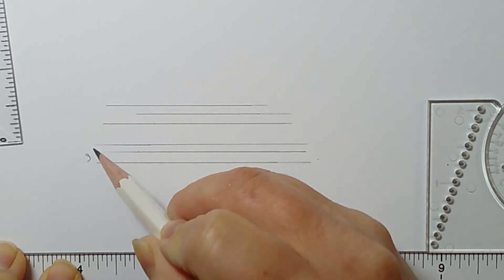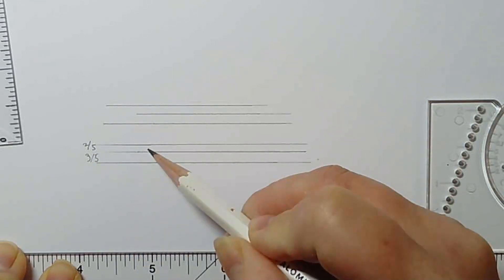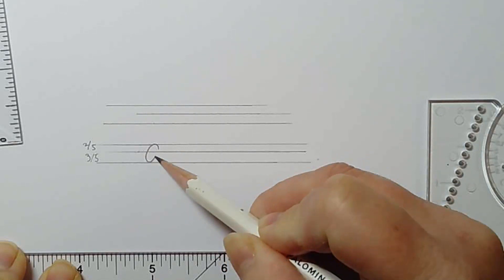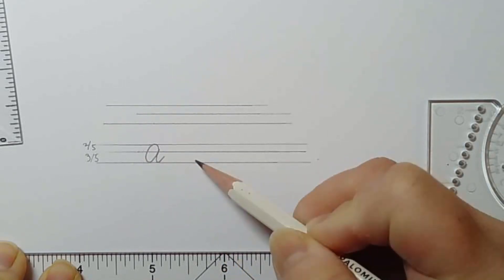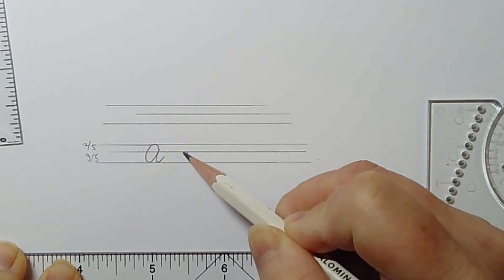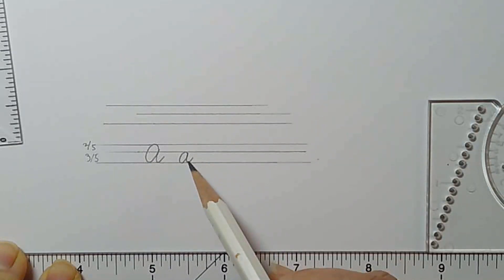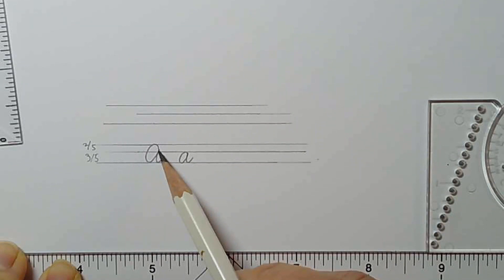This is three-fifths, because this means that this is 3 over 5 and this is 2 over 5. So this is going to be your uppercase letter, and this is your lowercase letter. This means that your lowercase letter is three-fifths to the uppercase letter.